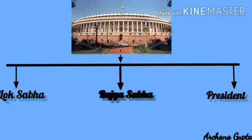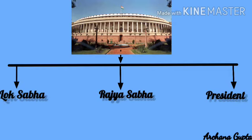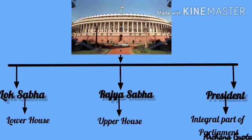The Indian Parliament consists of three organs: the Lok Sabha, the Rajya Sabha, and the President. The Parliament of India is bicameral, meaning it is divided into two houses — the Lok Sabha and the Rajya Sabha. Though the President of India is an organ of the Parliament, he is not a member of either house and does not sit in the Parliament.